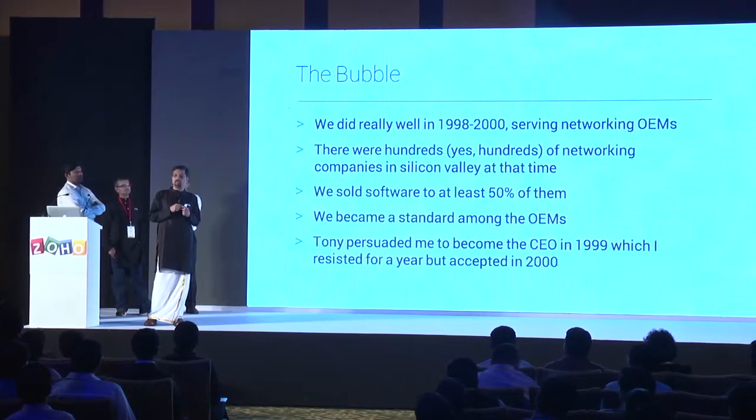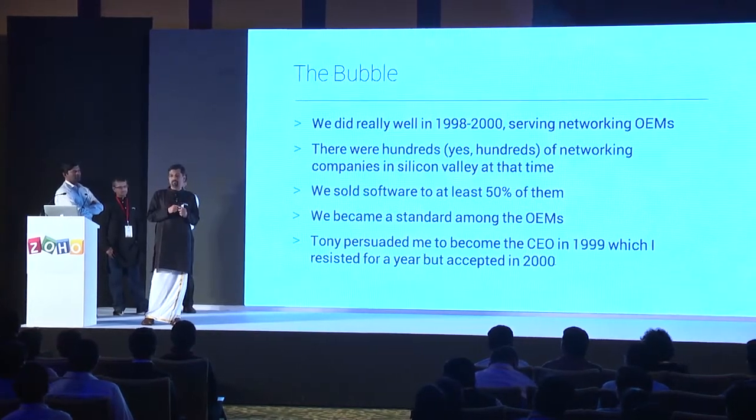The next two years were like a bubble. In bubble times, if you hit something — we happened to be the picks-and-shovels guys to the gold miners, that's how I say it. The networking boom was on. In Silicon Valley, this is interesting history to remember — there were 300 optical networking companies at that time. I'm not exaggerating. I personally visited 150 of them to sell.